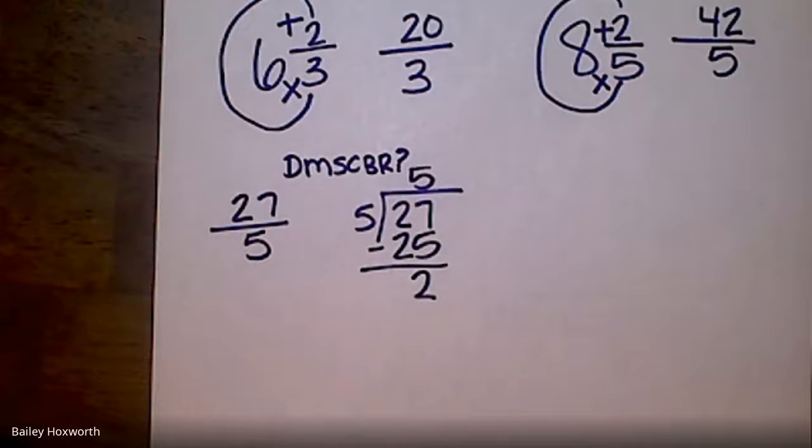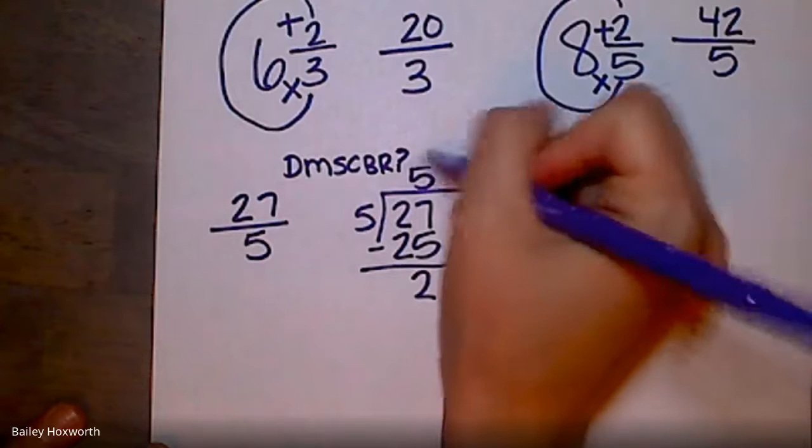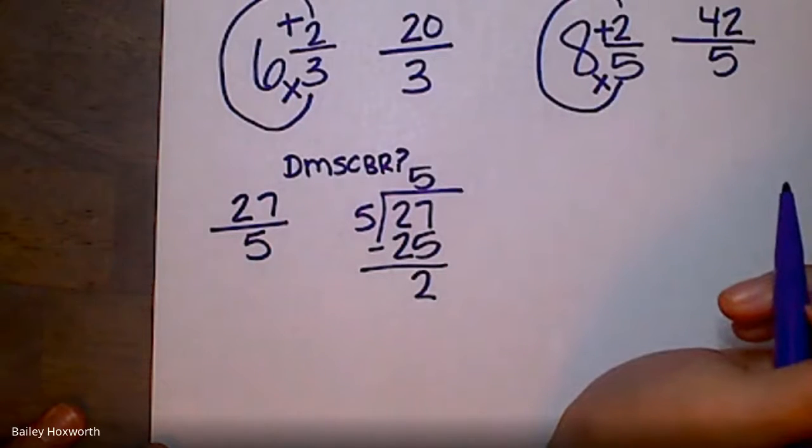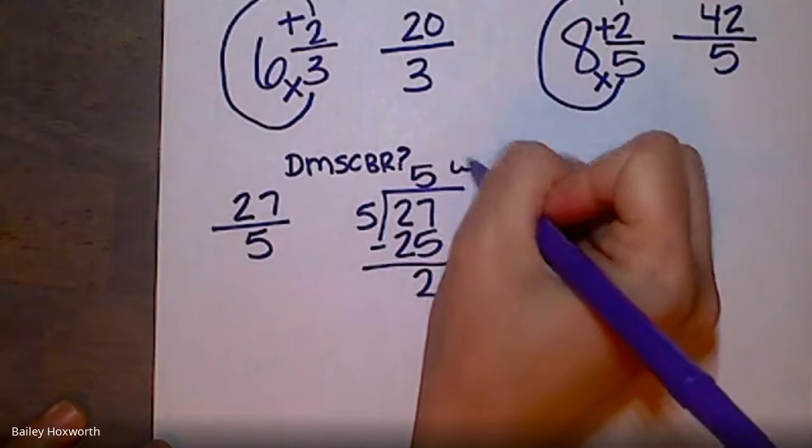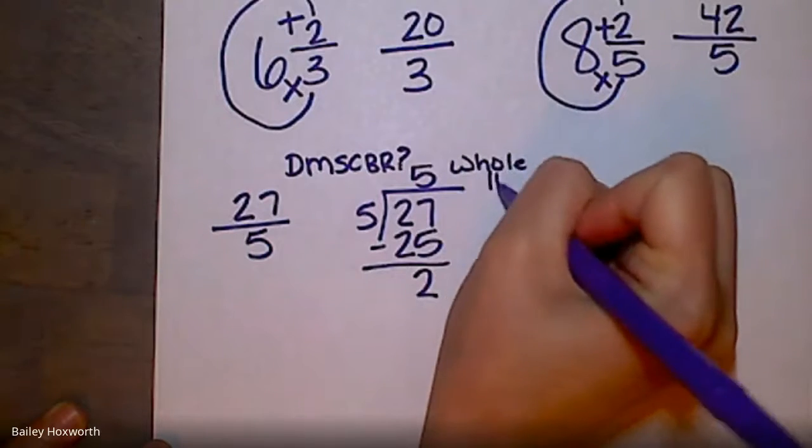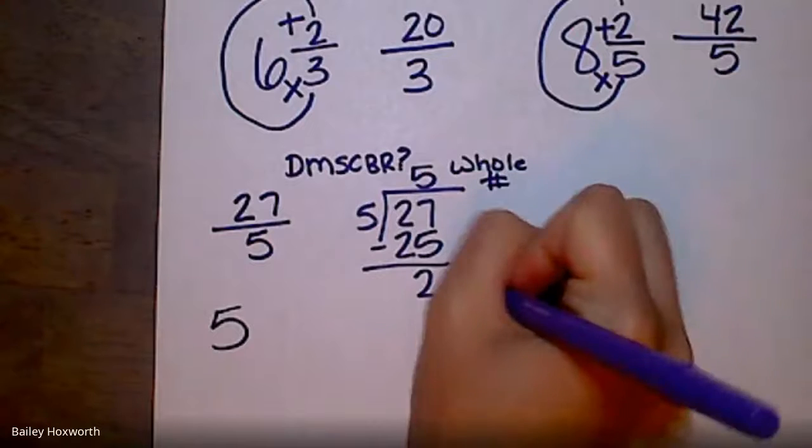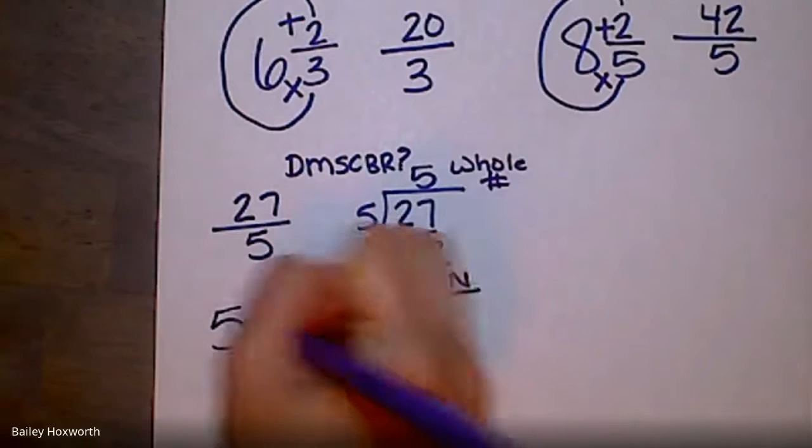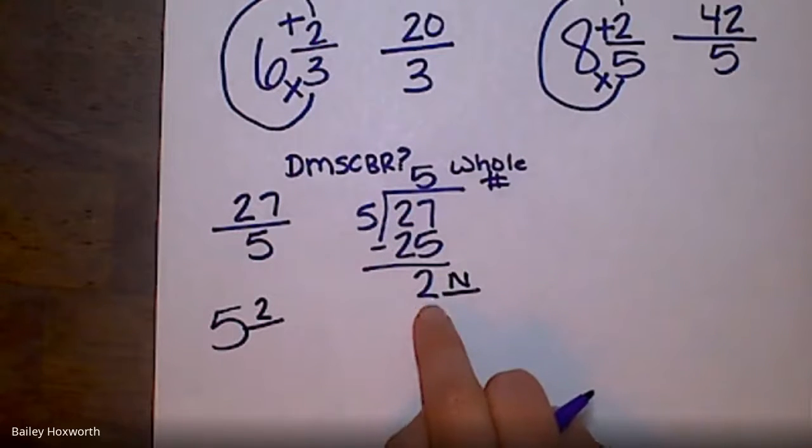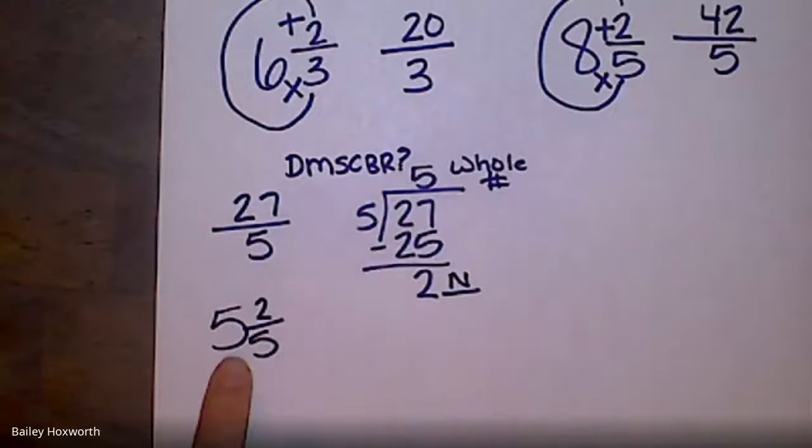Okay, this is where some of us get confused. Don't get confused. If I was to ask you what is your answer, your answer is 5, right? Just 5. So 5 is your whole number. Your remainder is your numerator. What's the leftover is your numerator, and then the denominator stays the same. It's always going to be this. So 5 and 2/5 is your mixed number.